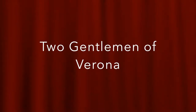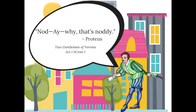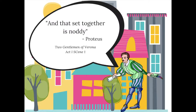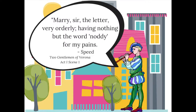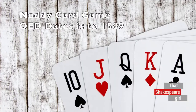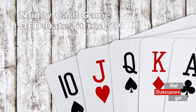All three times the word Noddy appears in Shakespeare's plays come from Two Gentlemen of Verona. The first is in Act 1 when Proteus says, 'Nod, I — why, that's Noddy.' The second is also Proteus, later in the same scene: 'and that set together is Noddy.' Lastly, the character Speed, again from Two Gentlemen of Verona, appears to be punning on the card game and the word's definition as 'fool,' when he says, 'Marry sir, the letter very orderly, having nothing but the word Noddy for my pains.'